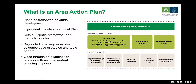So what is an Area Action Plan? It's a planning framework to guide development — essentially like a local plan but site-specific. There are a number of policies within it and all of those have to be justified by evidence. At the moment we're up to around 53 different pieces of evidence documents that sit behind this Area Action Plan, and it has to go through two rounds of public consultation — this being the first one — before it goes to examination for a public hearing where it will be assessed by an independent planning inspector. So it carries the same sort of weight as a local plan.